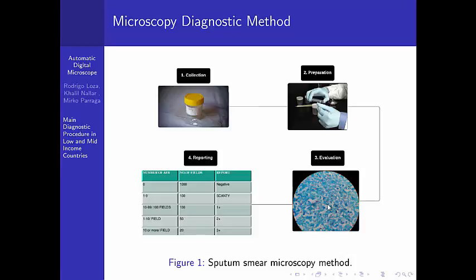After counting them, they have to make a report, and the report is made on the chart that you can see over here. If they find zero bacilli in 1000 fields of the microscope, then you get a negative report. If they find, for example, 10 or more in each field analyzing 20 fields of the microscope, then that means three crosses — and that's the maximum, that's the worst diagnostic that you may have.